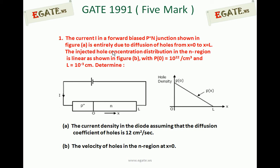Look at the diagram. The diagram consists of a P-plus-N junction and its hole density. The current I in a forward biased P-plus-N junction shown in the figure is entirely due to diffusion of holes from X equal to 0 to X equal to L. The injected hole concentration distribution in the N region is linear as shown in the figure, with P(0) equal to 10 to the power 22 per centimeter cube and L equal to 10 to the power minus 3 centimeters.